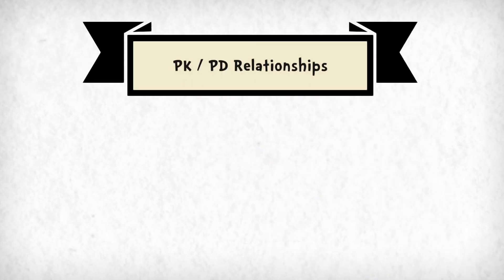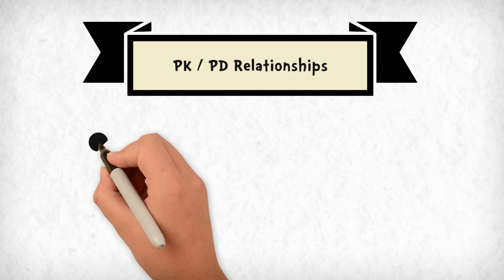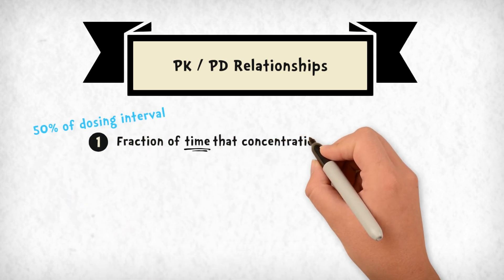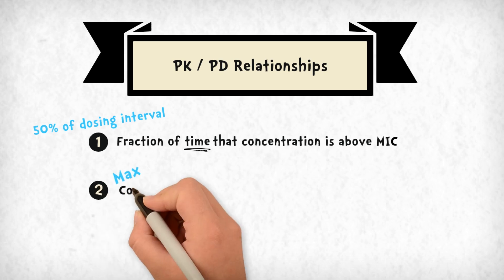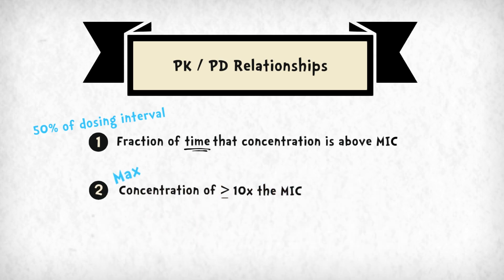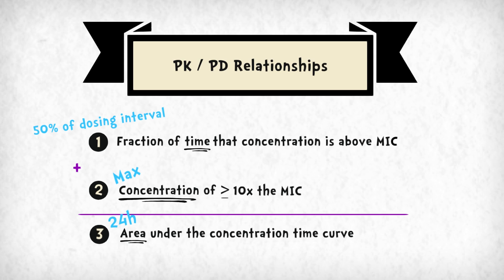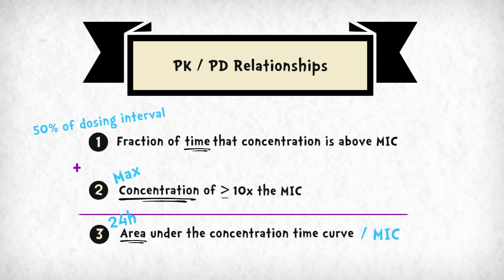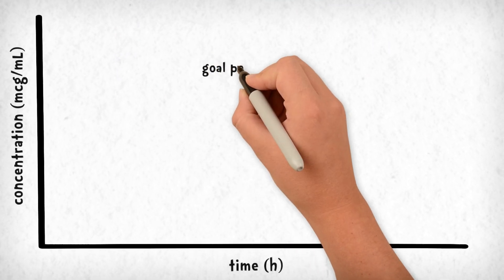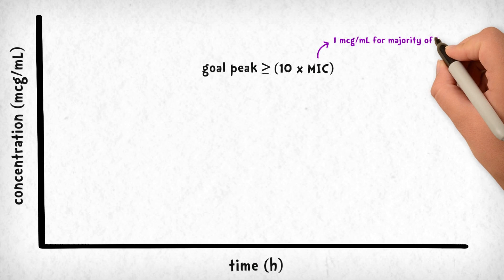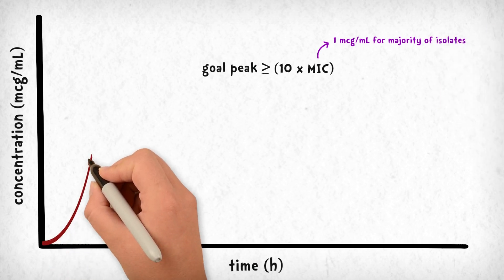Antibiotic activity can be categorized into three pharmacokinetic and pharmacodynamic relationships of exposure and response: fraction of time — the percent of the dosing interval that free drug concentration remains above the MIC; maximal free drug concentration reaching 10 times the MIC; and the area under the concentration-time curve over 24 hours divided by the MIC. For gentamicin, this means the serum concentration needs to reach at least 10 times the MIC of the targeted bacteria for best effect. It doesn't matter how long that concentration is maintained, only that it is reached.